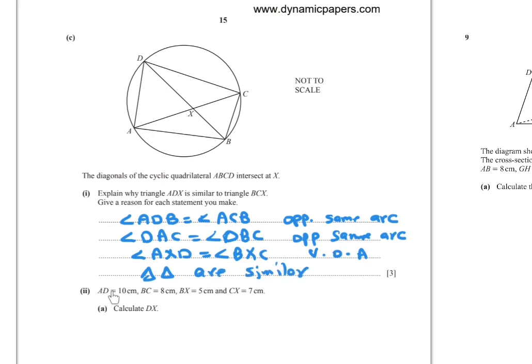Part II. AD equals 10 cm. BC equals 8. BX equals 5. CX equals 7. Now find DX.